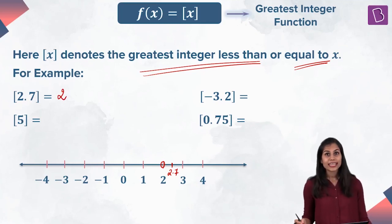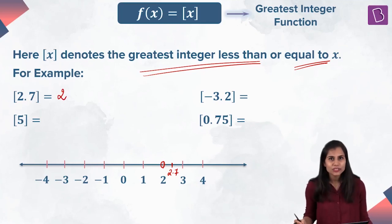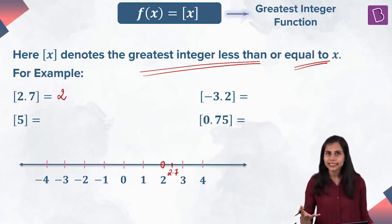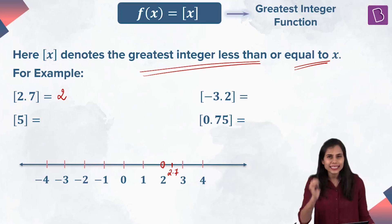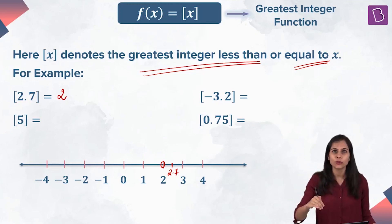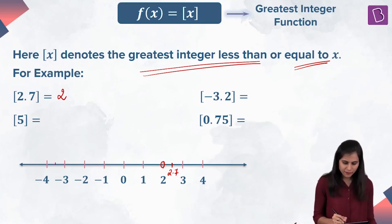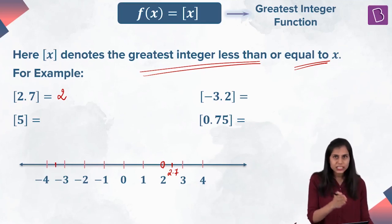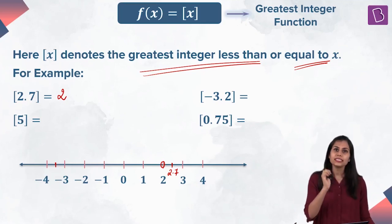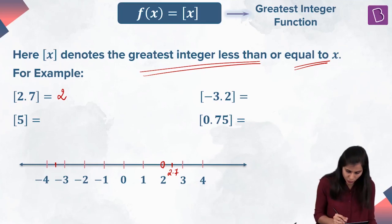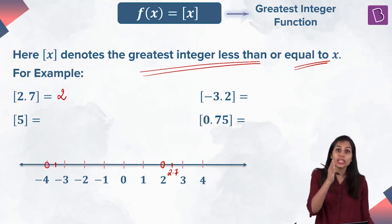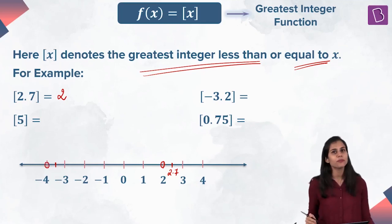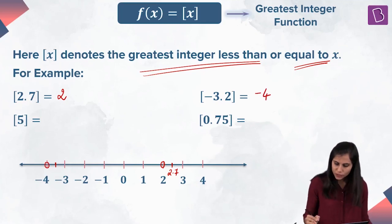What about when x is minus 3.2? When x is minus 3.2, it is again not an integer. So bracket minus 3.2 will be the greatest integer strictly less than minus 3.2. Minus 3.2 sits somewhere here between two consecutive integers, minus 4 and minus 3. The greatest integer strictly less than minus 3.2 is minus 4, which is lying on the immediate left of minus 3.2. So minus 4 is the value.